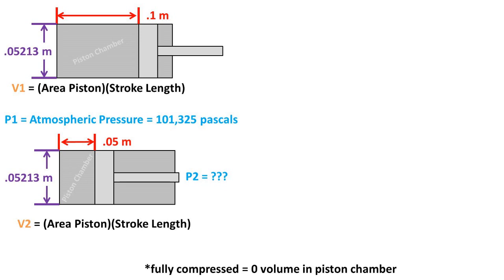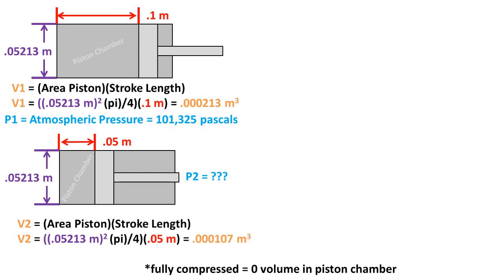We can do this by taking the area of the piston times the remaining stroke length. Plugging the diameter into the area of a circle formula, which is diameter squared times pi over 4, and then multiplying times the remaining stroke length, we get a volume of initial state, or state 1, of 0.000213 meters cubed, and a volume of final state, or state 2, of 0.000107 meters cubed.